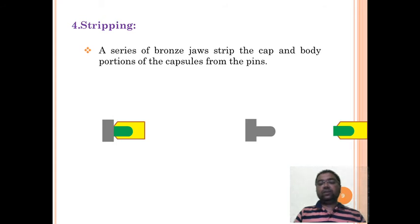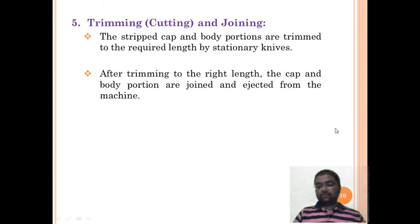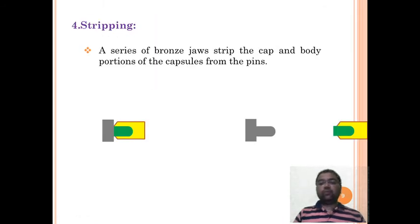These bronze jaws come to the pins and strip the capsule from the pins. Now we get the cap or body. Similar way we can manufacture caps and bodies.